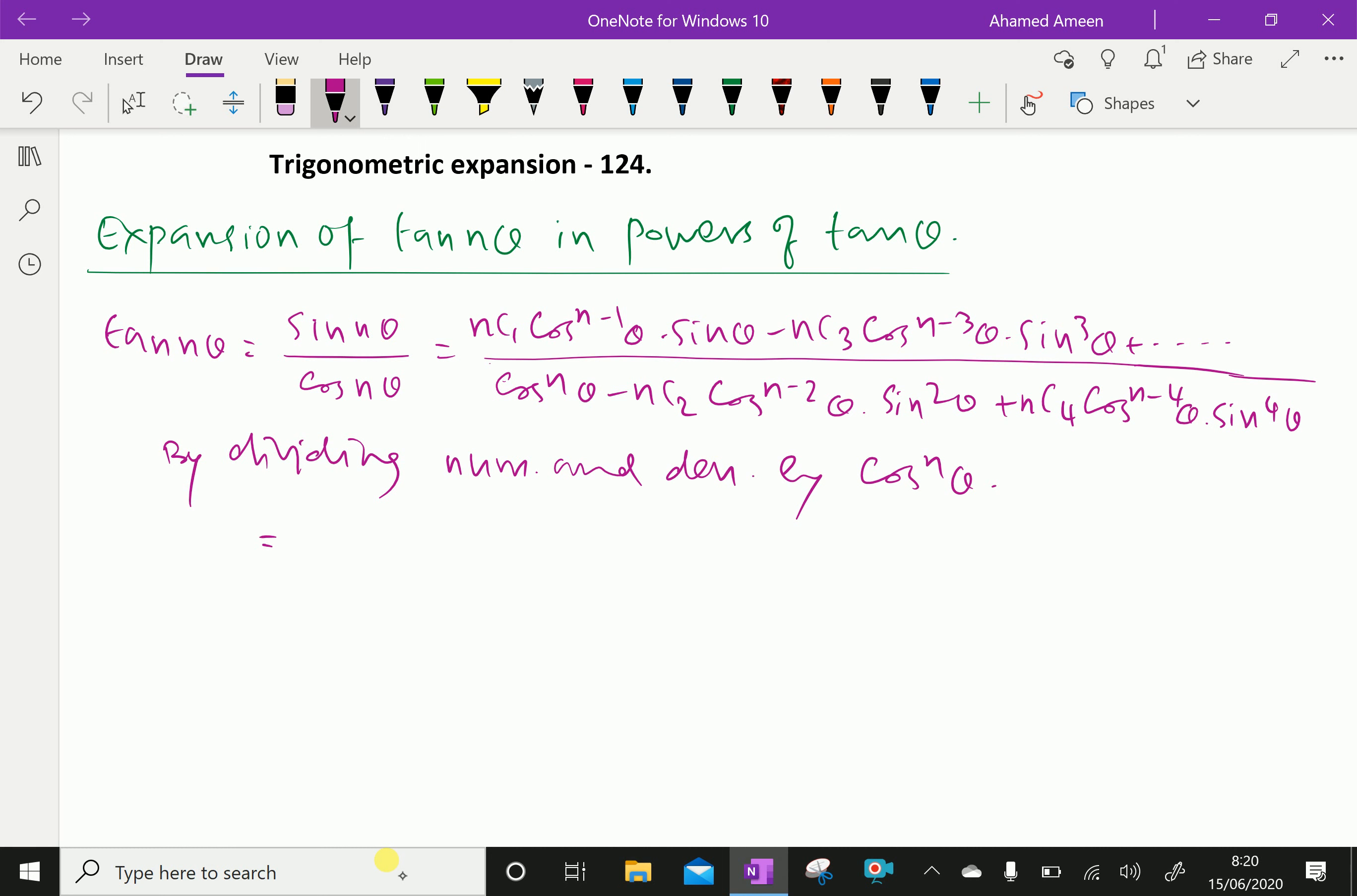We can write tan power n theta. The first term is cos power n minus 1 theta divided by cos power n theta, which gives us cos power n minus 1 theta divided by cos theta. This simplifies downward, so sine theta over cos theta is Nc1 tan theta.